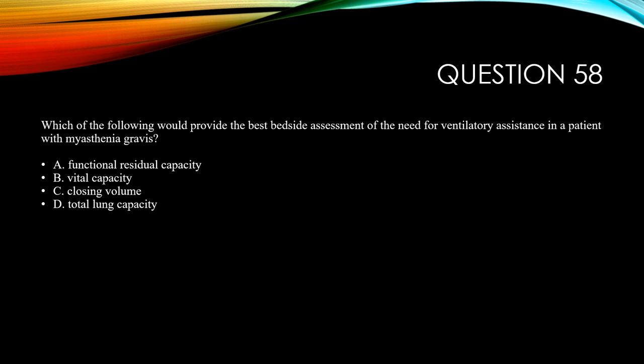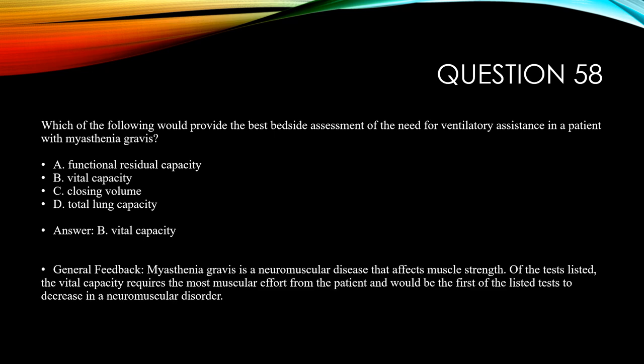The answer is B, vital capacity. NIF would also be a good measurement, but it's not a choice. Myasthenia gravis is a neuromuscular disease that affects muscle strength. Of the tests listed, vital capacity requires the most muscular effort from the patient and would be the first of these tests to decrease in neuromuscular disease or disorders.